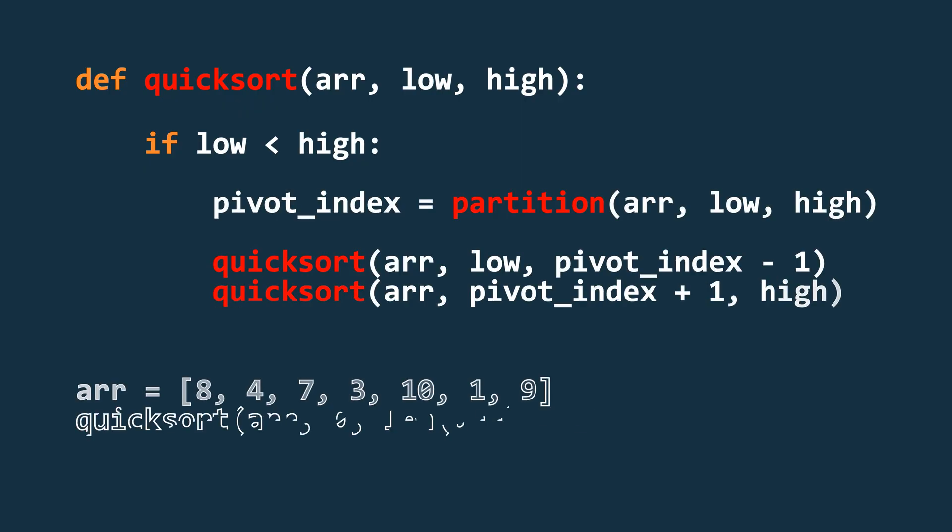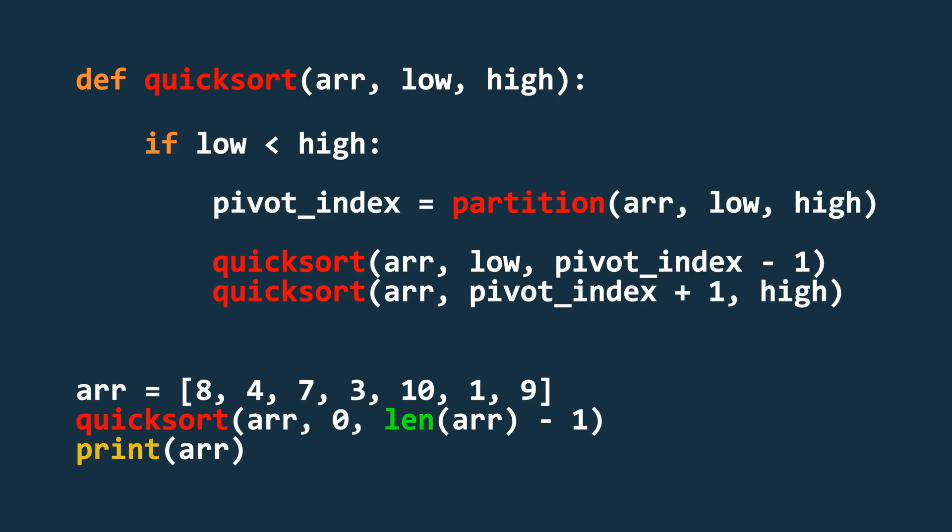Next, we move on to the actual quicksort function. Start by defining the function with the array and the low and high indexes as input parameters. If low is less than high, create a variable called pivot_index and set it to the result of calling the partition function with the array, low and high inputs. The partition function will return the index of the pivot element after the rearrangement. Then, recursively call the quicksort function on both the left and the right parts of the array.